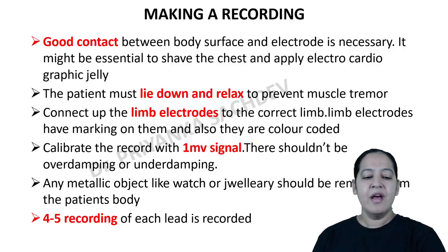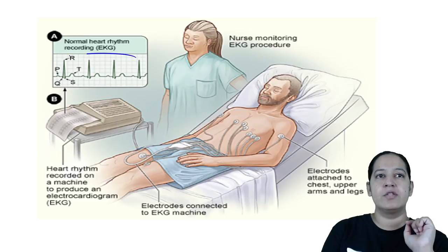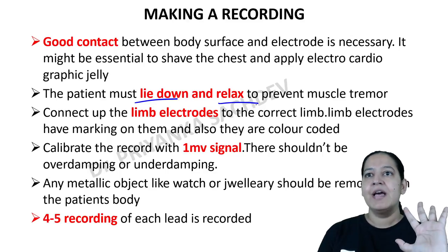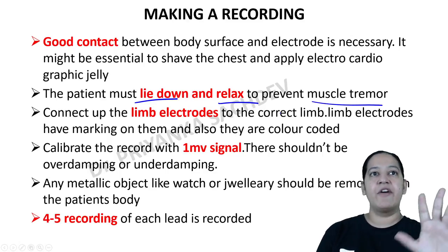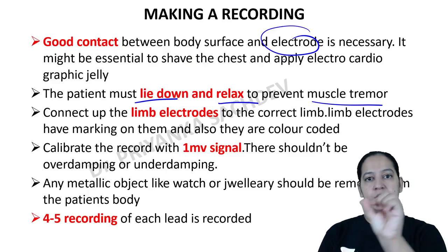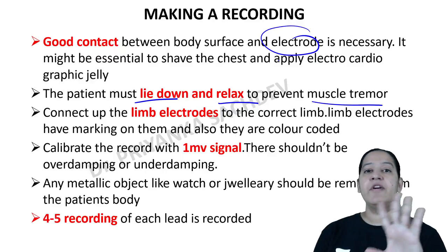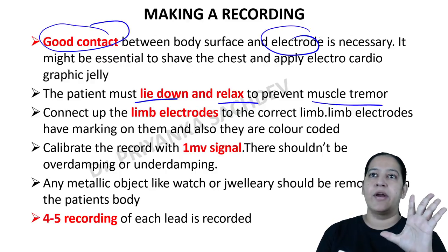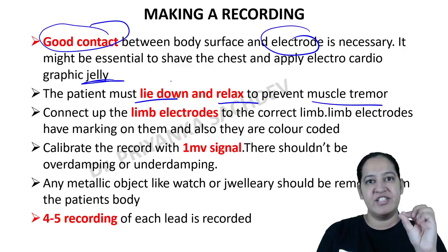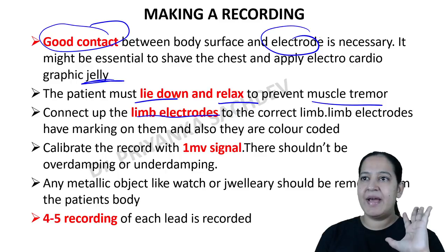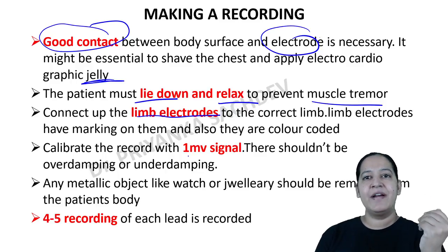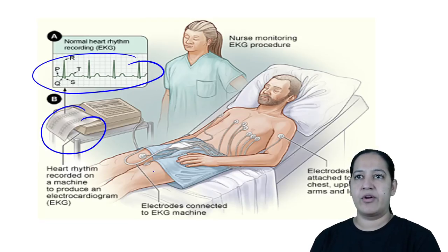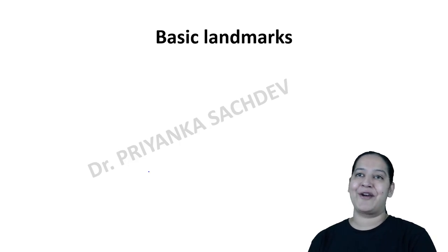Now let me tell you how to make an ECG recording. First, lie the patient down comfortably and ask them to relax to prevent muscle tremors. Put the electrodes on the body — 6 on the chest and 4 on the limbs, totaling 10 electrodes. Use jelly for good contact. Connect the limb and chest electrodes, calibrate the machine for a 1 millivolt signal, and take at least 4 to 5 recordings.